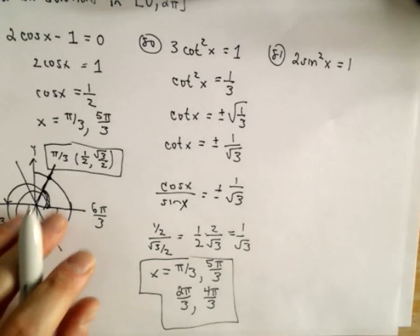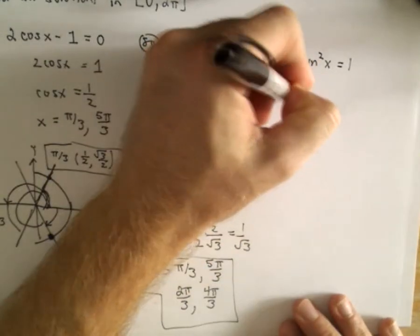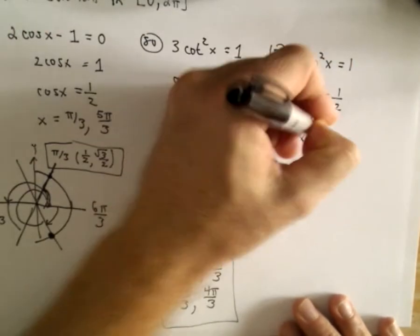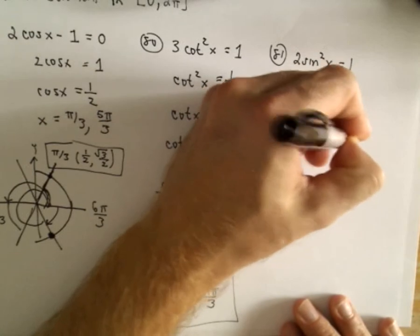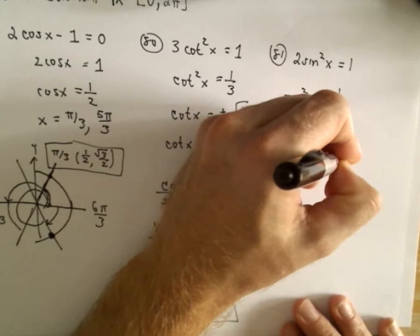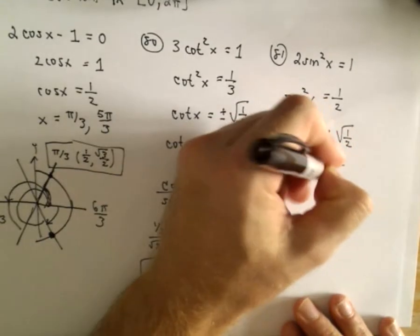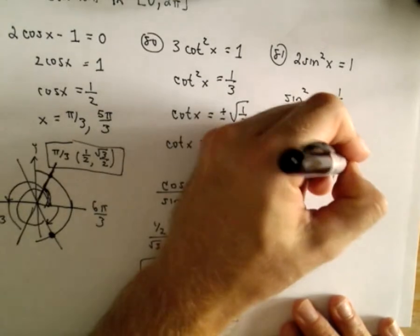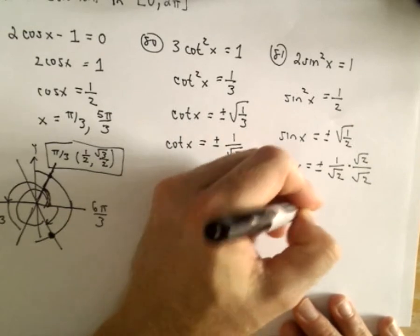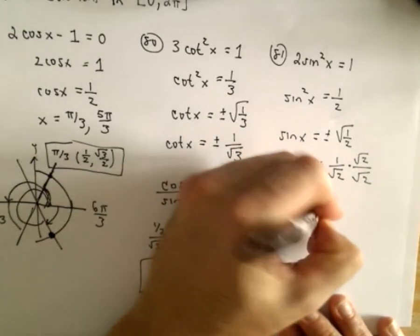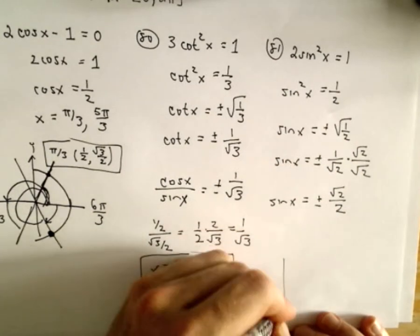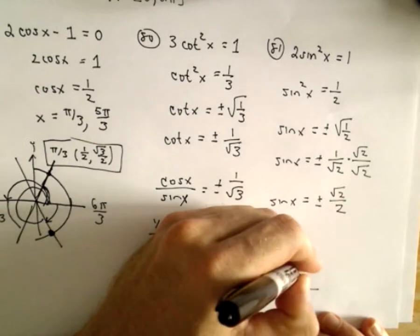Last but not least, we have 2 sine squared x equals 1. Again, we divide both sides by 2, then take the square root of both sides, giving us sine x equals plus or minus the square root of 1/2. The square root of the numerator is 1 and the square root of the denominator is square root of 2. I'm going to rationalize the denominator by multiplying numerator and denominator by square root of 2.